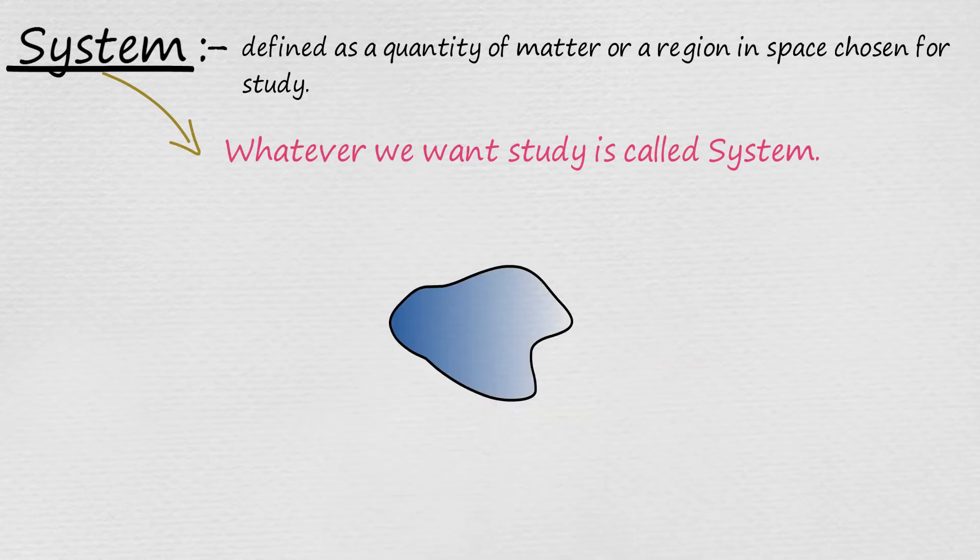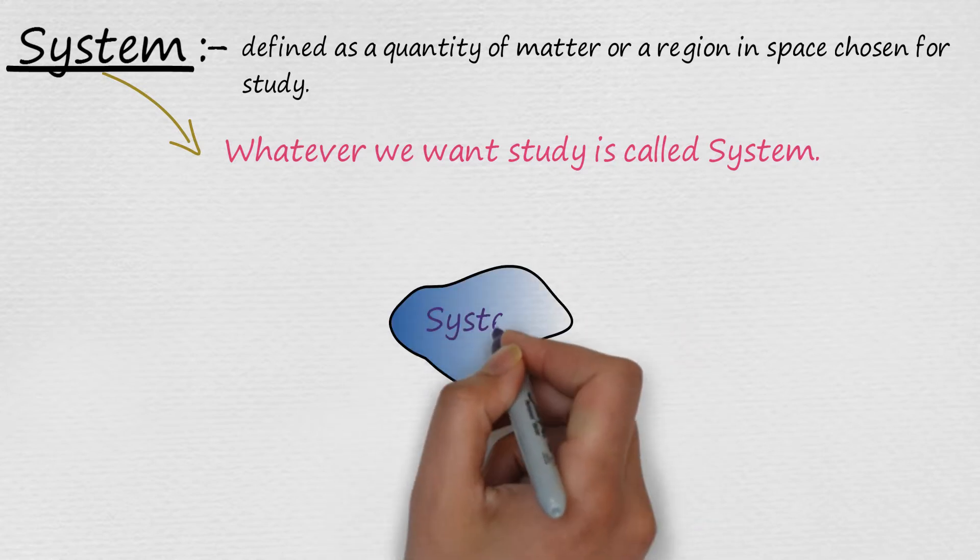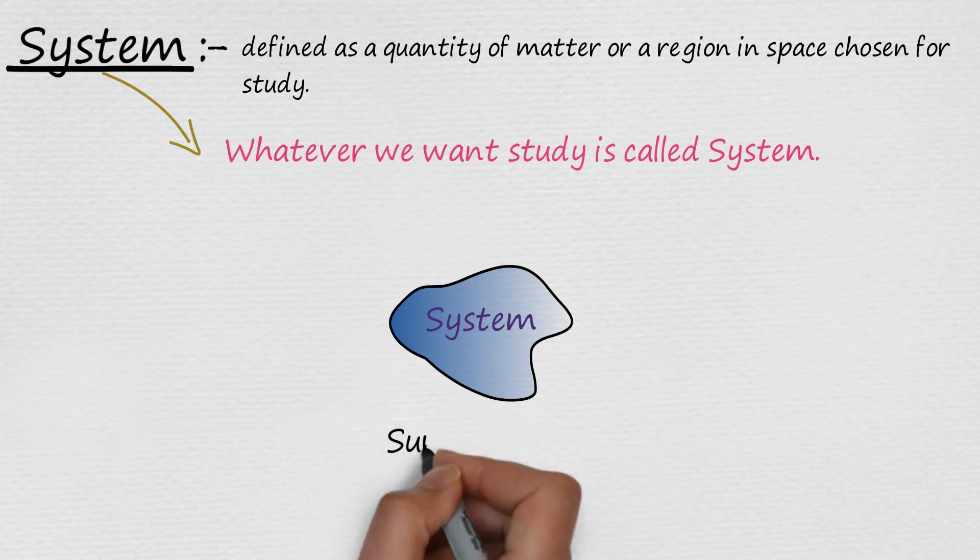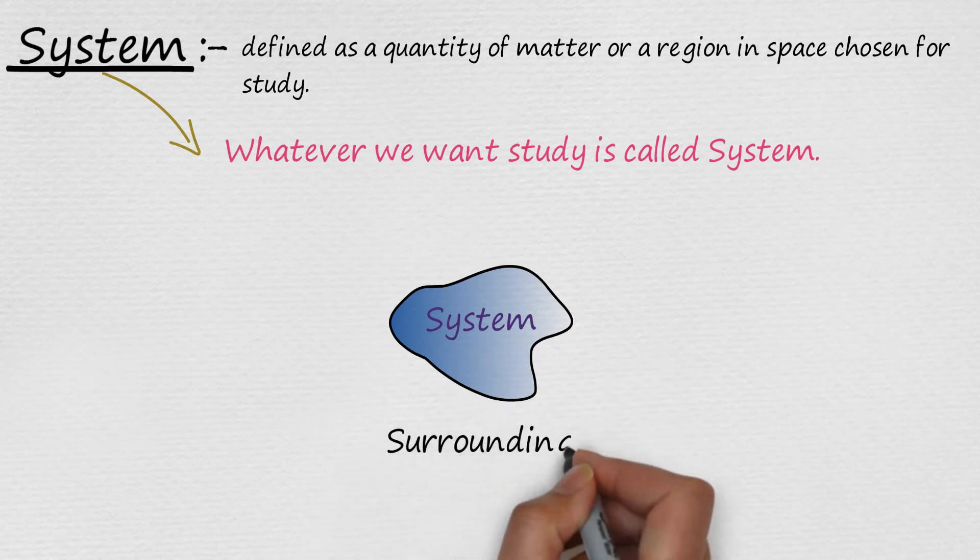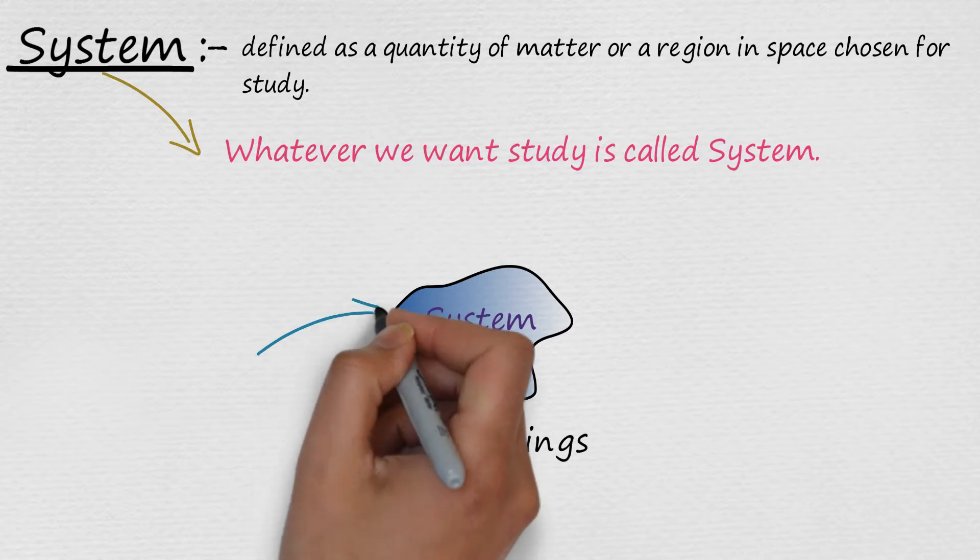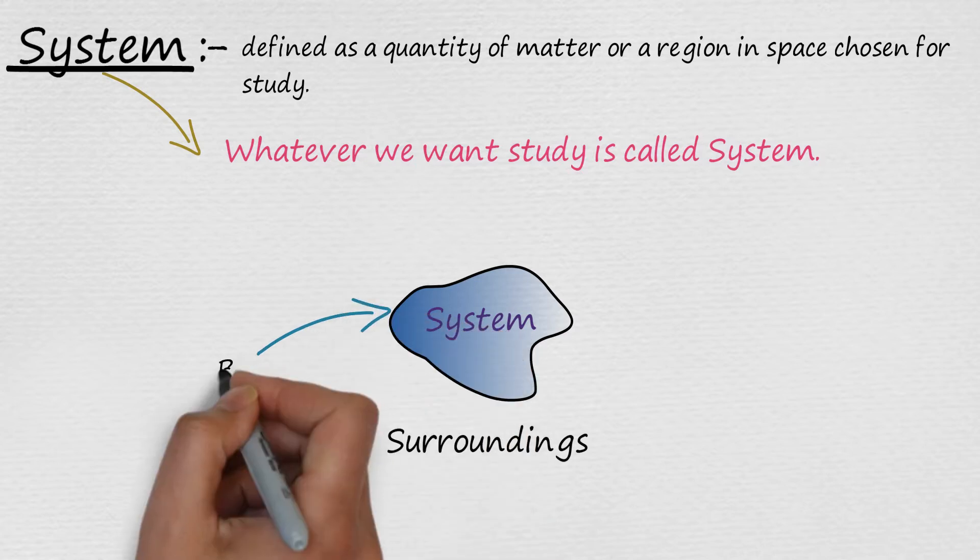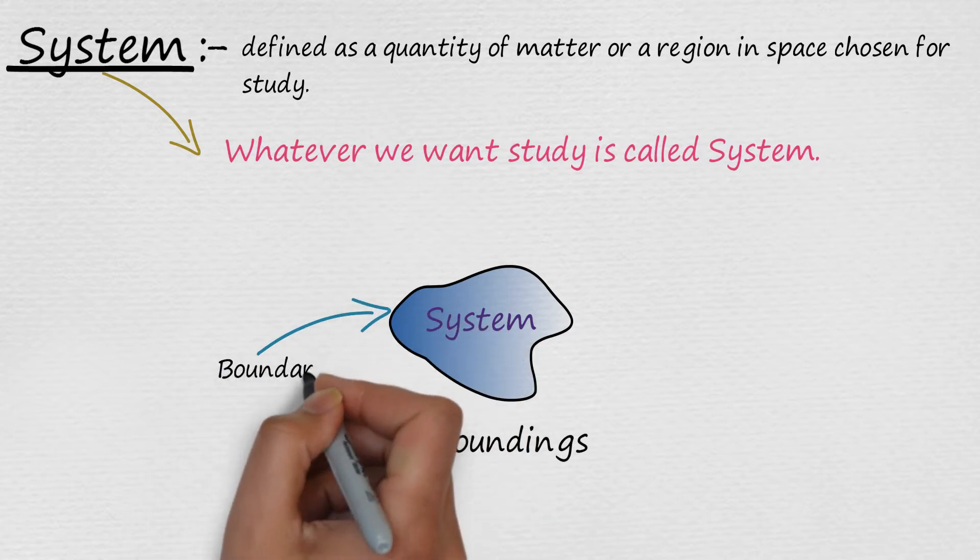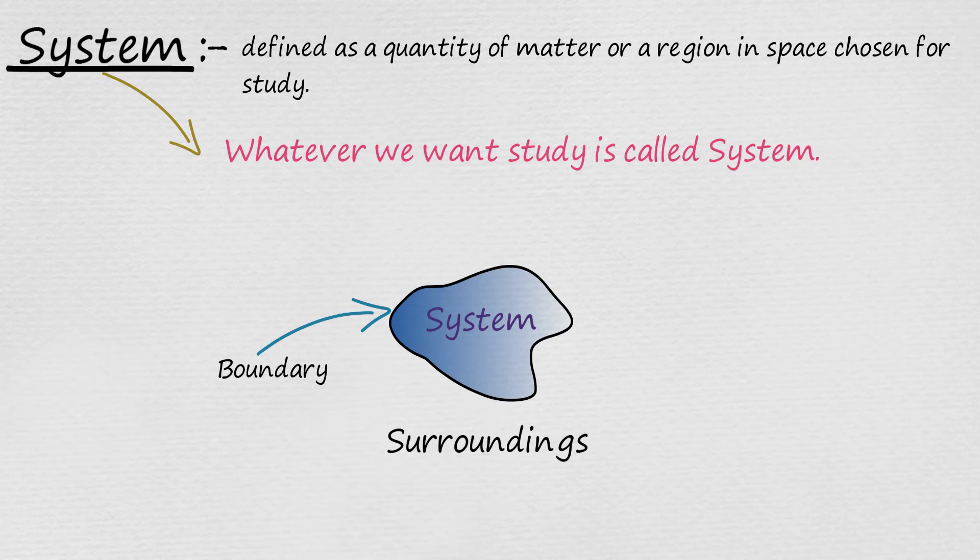This is system. The mass or region outside the system is called the surroundings. The real or imaginary surface that separates the system from its surroundings is called the boundary. The boundary of a system can be fixed or movable.